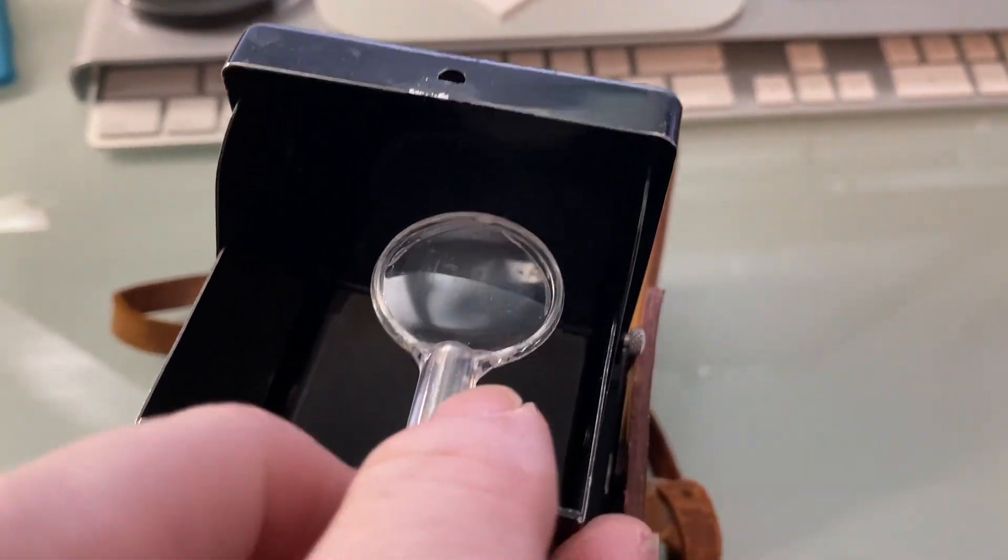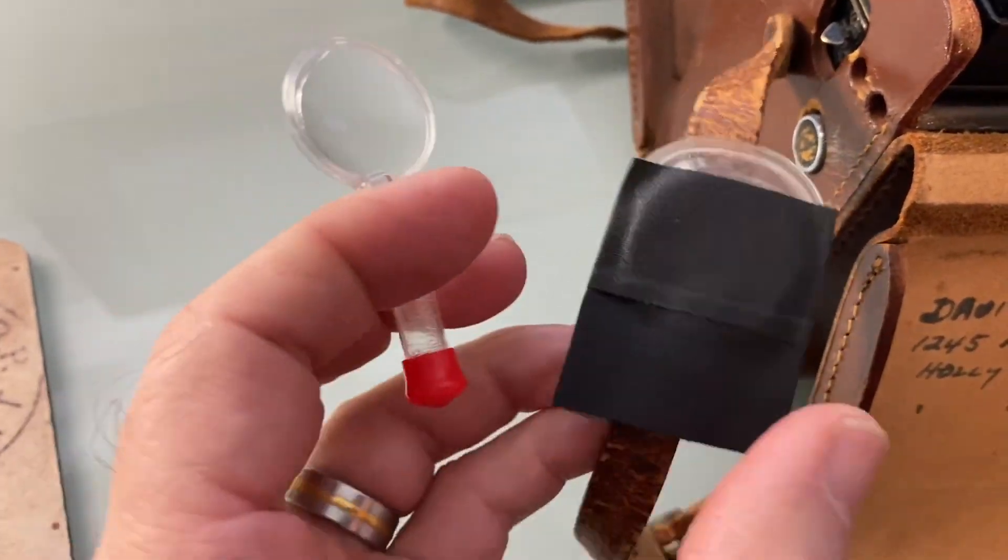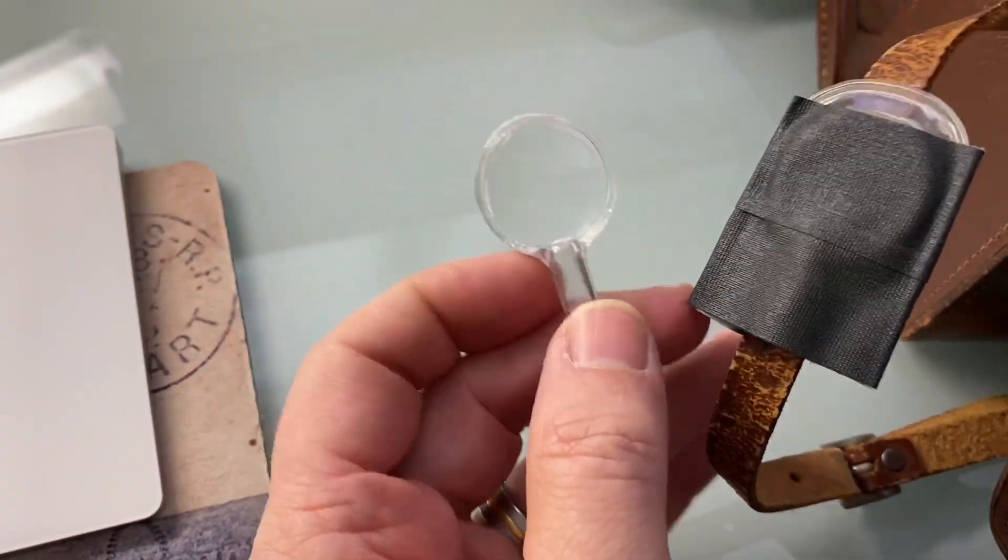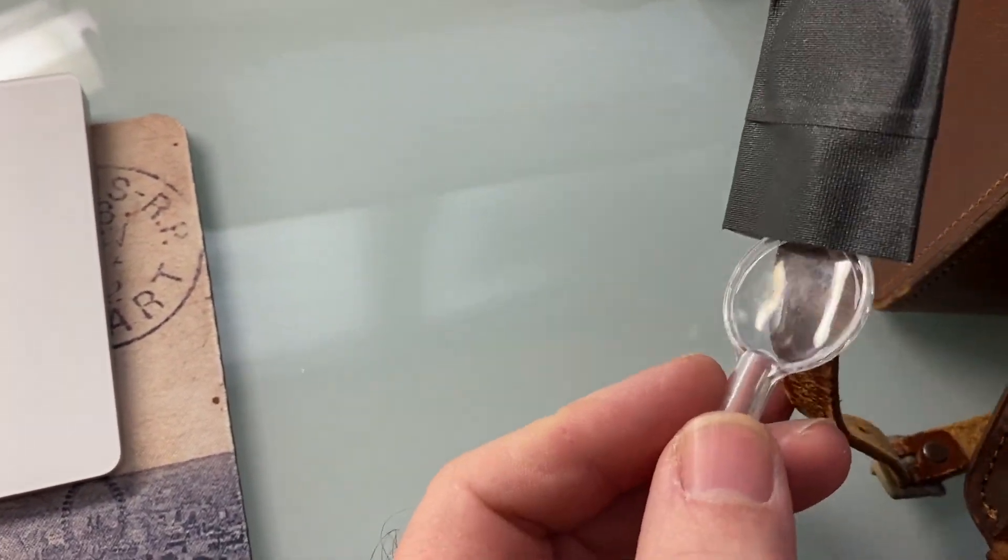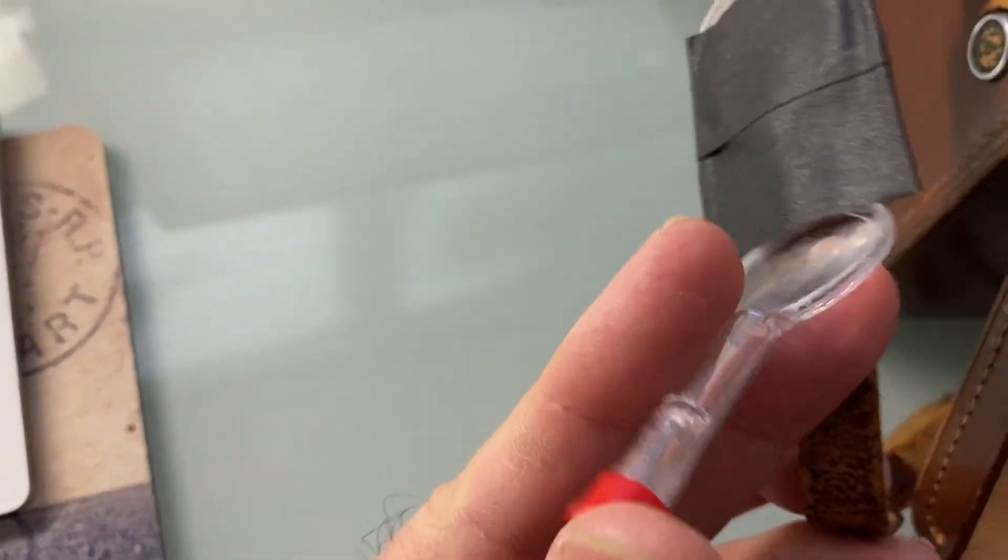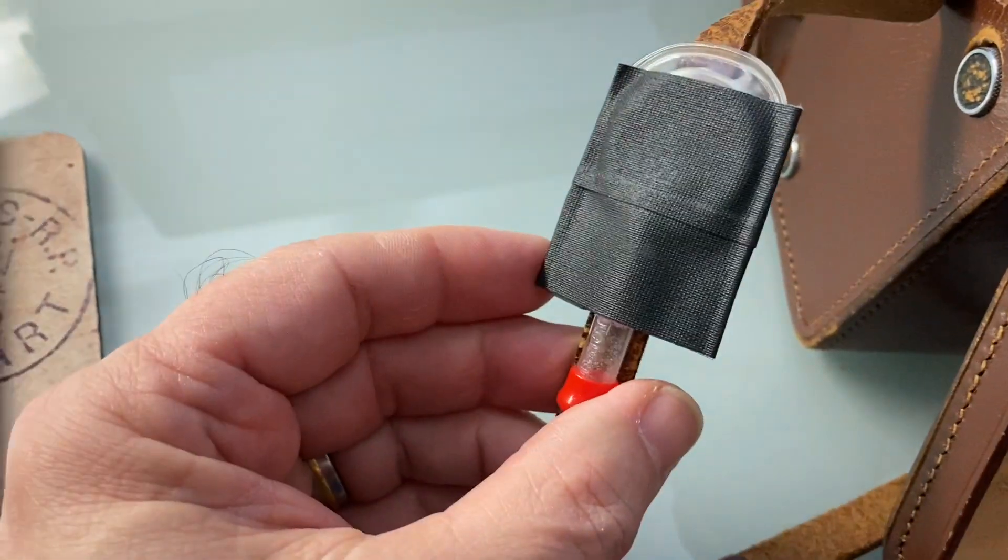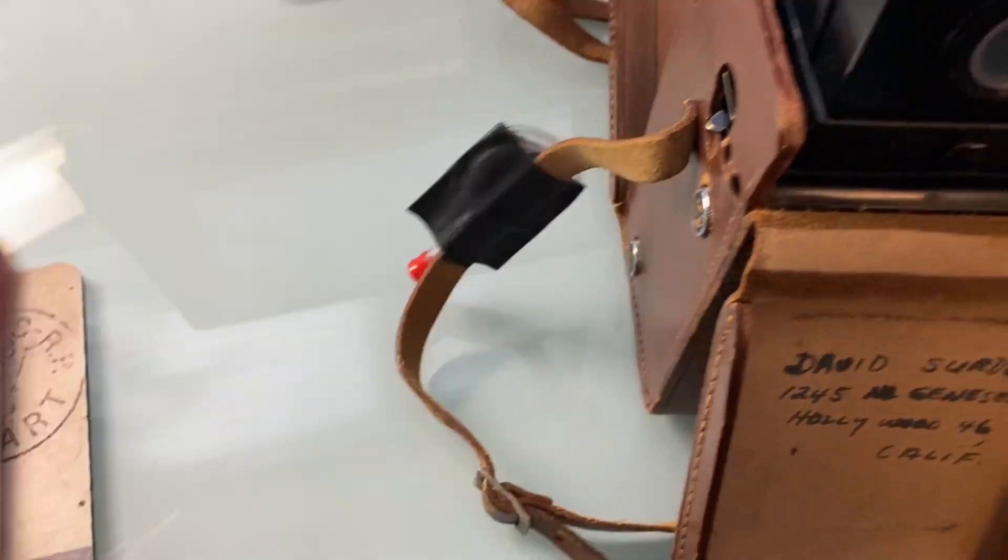What I did in terms of carrying it was I took the little case that it comes with, took some gaffer's tape, and attached that to the strap on the camera. The loop just fits in there, like so, and I've always got it with the camera.